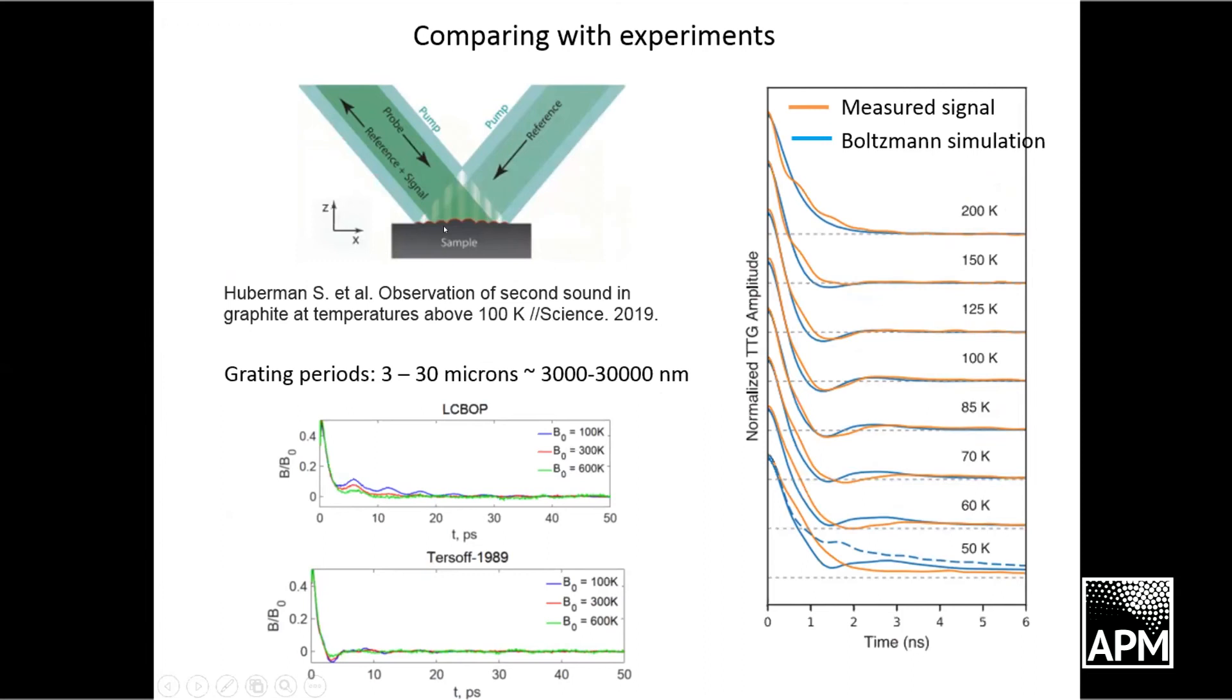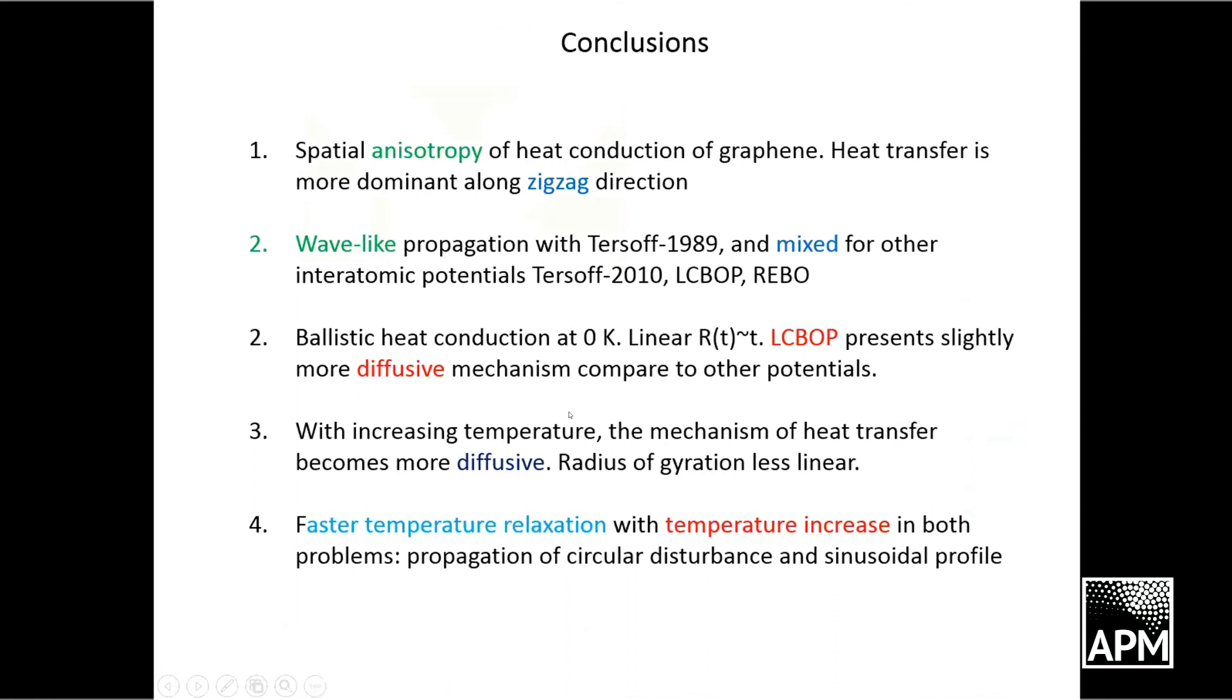We tried to compare our results with experiments which use the same kind of sinusoidal relaxation in graphite. They obtained close relaxation profiles, kind of close to the ones we obtained. But the times in their experiments are much longer than in ours because they had greater periods much longer than in our work. Also, we could see they have this peak for low temperatures, as we have for Tersoff 1989, suggesting that maybe at this temperature the mechanism is more like a transition than diffusive. Qualitatively, our results agree with the experimental results.